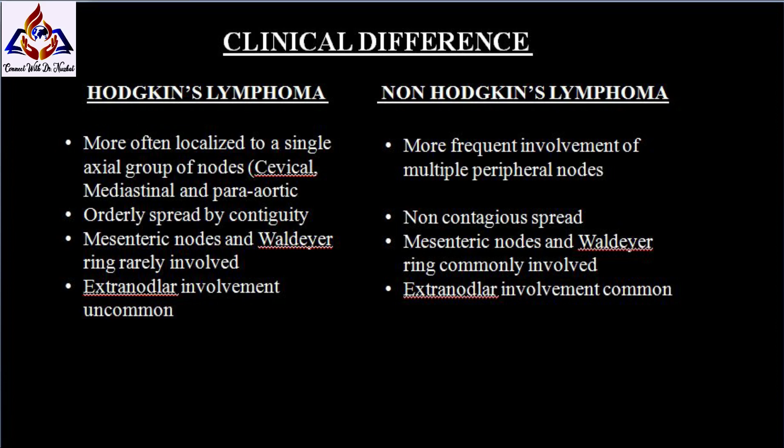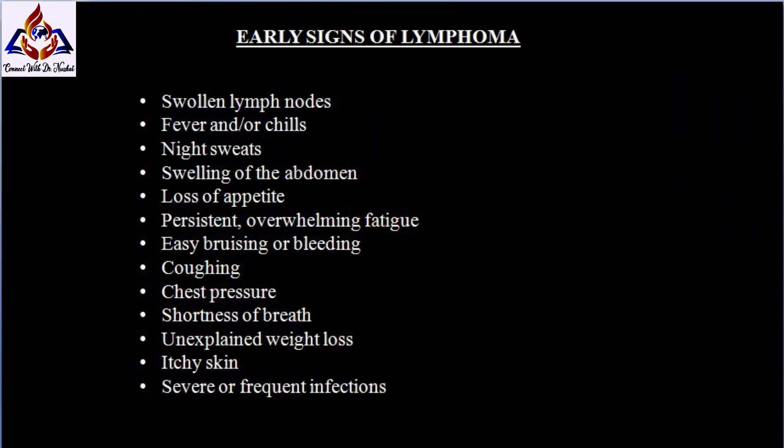In Hodgkin's, extranodal involvement is uncommon, but in non-Hodgkin's extranodal involvement is common. Early signs of lymphomas include: swollen lymph nodes, fever or chills, night sweats, swelling of the abdomen, loss of appetite, persistent fatigue, easy bruising or bleeding, coughing, chest pressure, shortness of breath, unexplained weight loss, and itching.